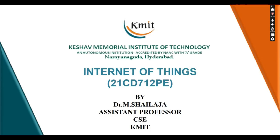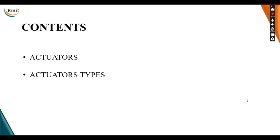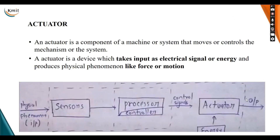The next video in unit 2 is about actuators and types of actuators. First we will see what is an actuator. An actuator is a component of a machine or system that moves or controls the mechanism or the system. An actuator is a device which takes input as an electrical signal or energy and produces physical phenomena like force or motion.